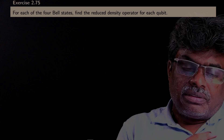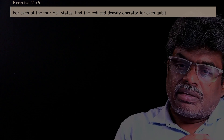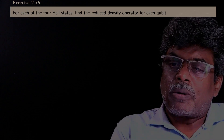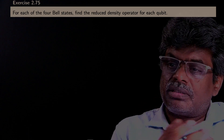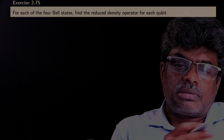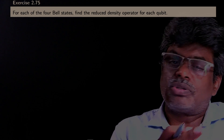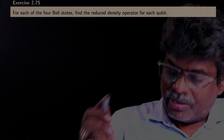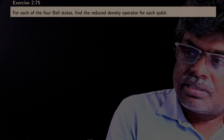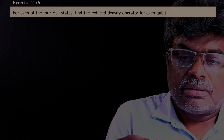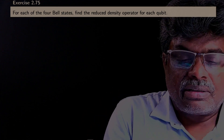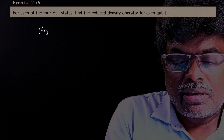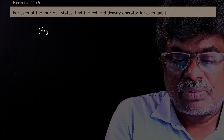In this next question, they are asking to find the reduced density operator for each qubit of the Bell states. First, let me take one Bell state. Generally, consider the Bell state |β_xy⟩.